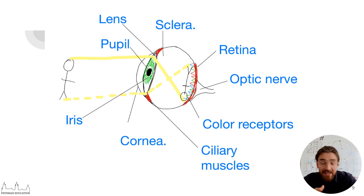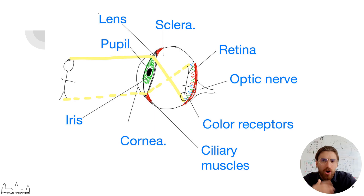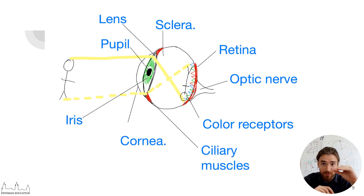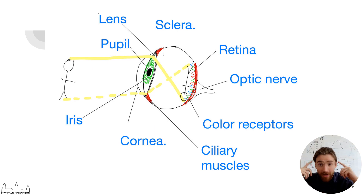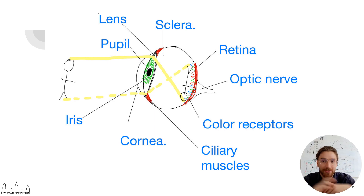All lenses — contact lenses and glasses — are convex lenses. When light is focused by them and comes back out, it is inverted. So everything we see is actually inverted in our eyes, but our brain has adapted to flip the image for us so it appears the right way up.